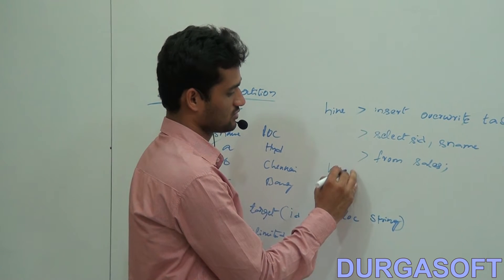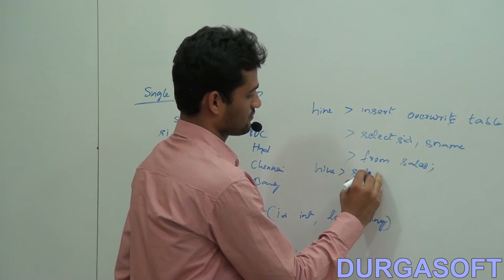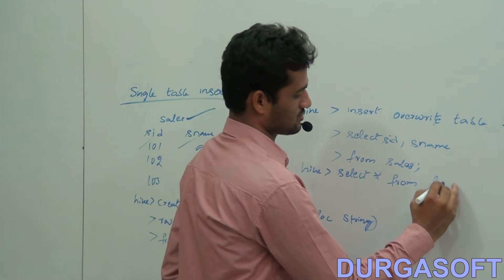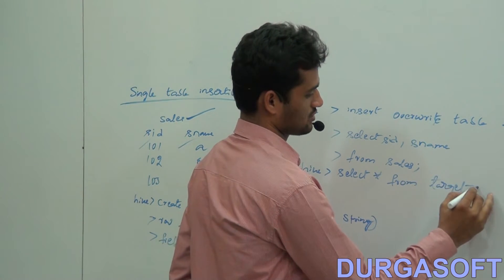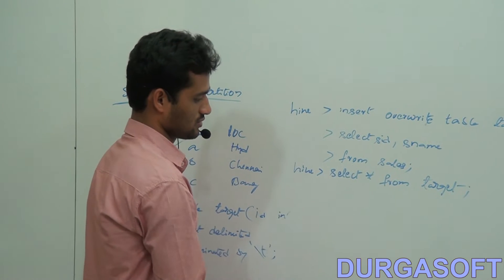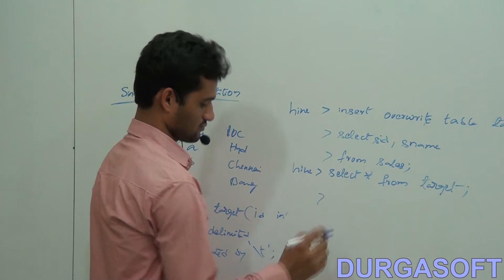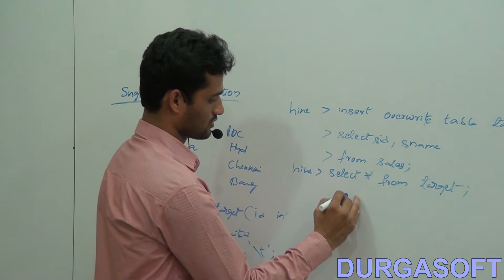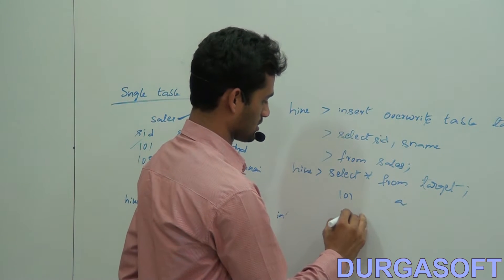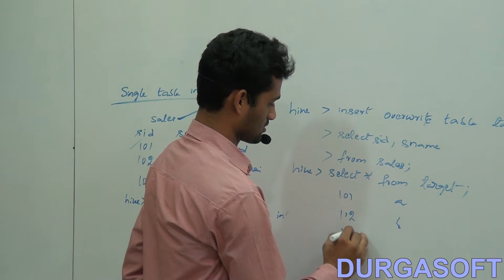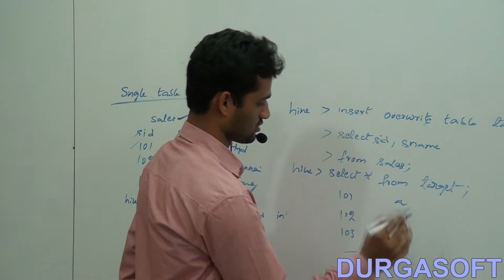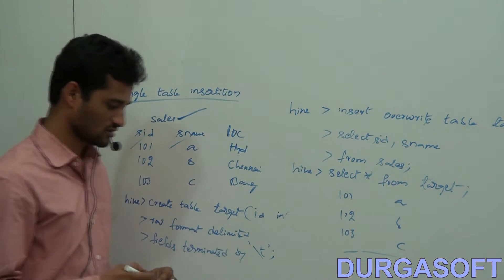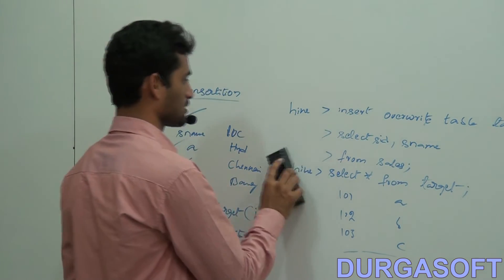If you have any doubt, just run SELECT * FROM target — it will display 101 A, 102 B, 103 C. This is what single table insertion. Now we will see how to work with multi-table insertion.